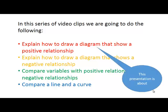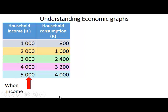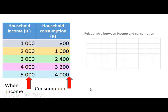This specific presentation is about drawing a diagram that shows a positive relationship. Here we have a table that shows household income and the corresponding household consumption. When household income is one thousand rand, household consumption is eight hundred. When household income increases to two thousand rand, household consumption increases to one thousand six hundred rand. So when income increases, household consumption also increases — the two variables change in the same direction. Now we want to show this on a diagram.